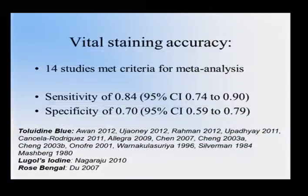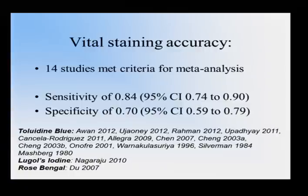On to vital staining. Again, 14 studies — sensitivity about 84%, specificity about 70%. The problem with many of these studies is that you've got to look at the population they were conducted on. Studies like the Mashberg studies from the 1980s were really looking at very high-grade dysplasias and early carcinomas — sensitivity and specificity are much higher there. But when you get into lower-grade dysplasias or benign lesions, the sensitivity and accuracy are not going to be as good.